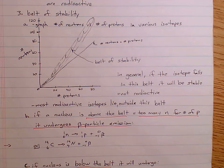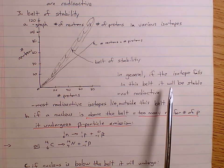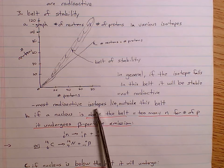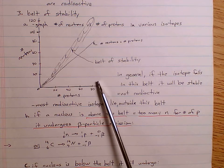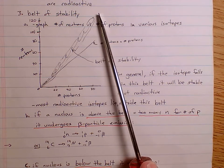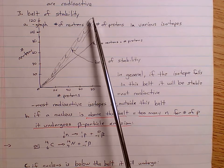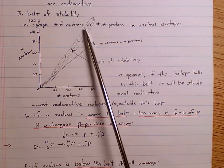In general, if an isotope falls in this belt of stability, it will be a stable isotope and not radioactive. Most of our radioactive isotopes lie outside this belt. Note we only go up to 80 here because, once we get to 84, none of them are stable — there's no stability at all once we're up at 84. These are elements that all have at least one or more stable isotopes that do not decay radioactively.